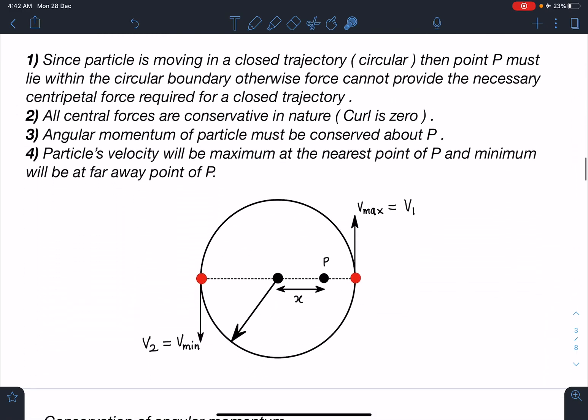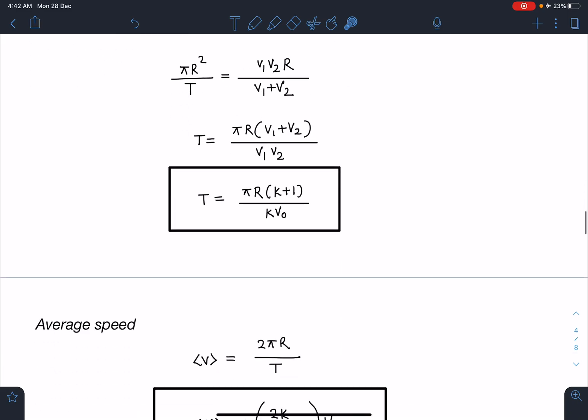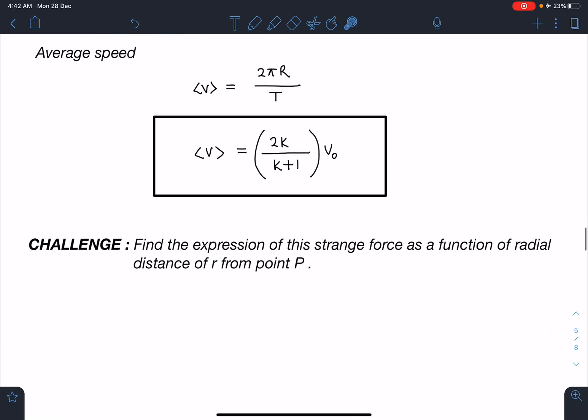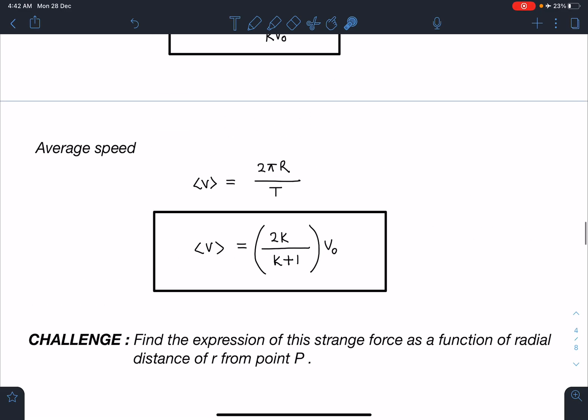Let me know in the comment section if you get the answer for all three parts. Finally, the challenge part is you need to find the expression of this strange force or central force as a function of radial distance r from point P. So you need to find out the form of that force F as a function of r. Leave your comments in the comment section.